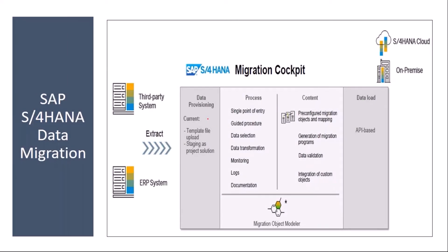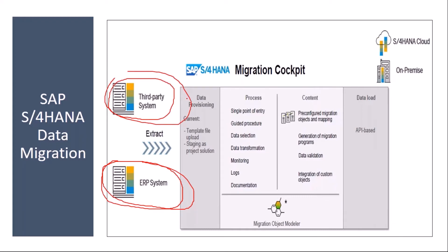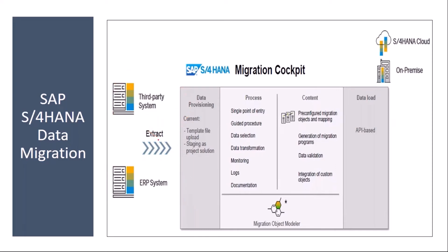Normally, during implementation, you may have an SAP ERP system — an old version — or any third-party legacy system. From these systems, you extract the data, put it in a file, and upload it into the SAP S/4HANA system. For this data upload, you use the migration cockpit.